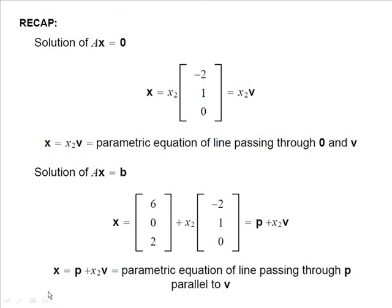Quick recap: for the homogeneous equation Ax equals 0, we had vector v and x2 times v — the parametric equation of the line through 0 and v. For the non-homogeneous system where b equals (0, 4), we had p plus x2 times v — the parametric equation of a line through p, parallel to v.